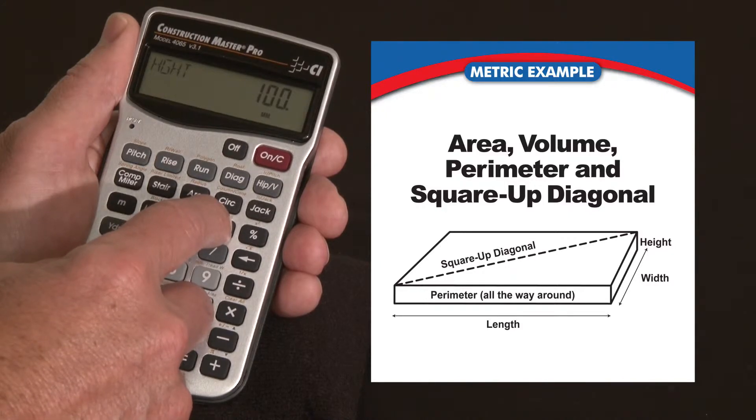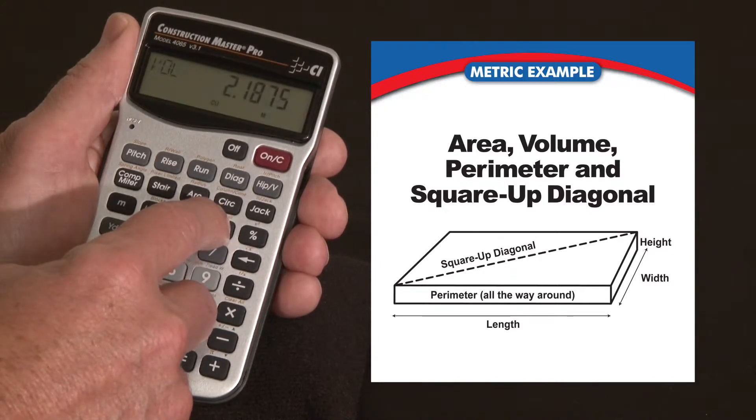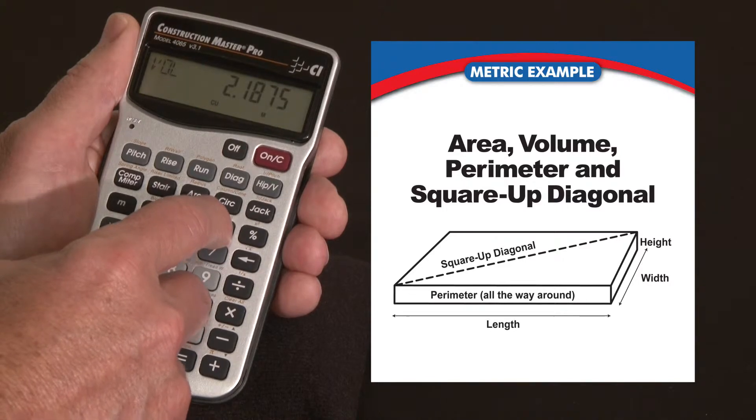Press the height key. It'll confirm the depth of 100 millimeters. Press it again. Gives me the cubic volume. It's 2.2, roughly, cubic meters.